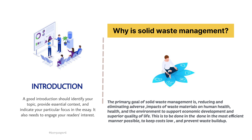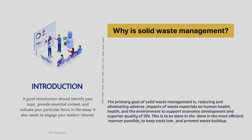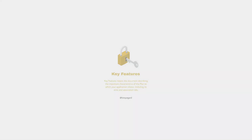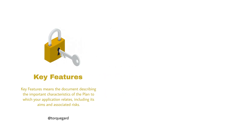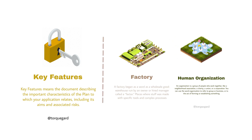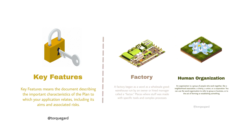This is to be done in the most efficient manner possible, to keep costs low and prevent waste buildup. Key Features: An organization is just like a human body. The most common features of business organizations are structure, processes, relationships, authority and responsibility, and performance and behavior of individuals and groups.